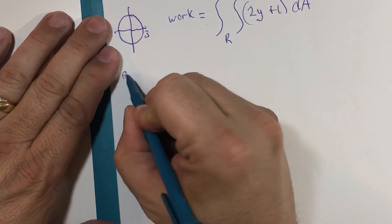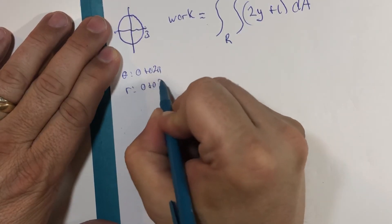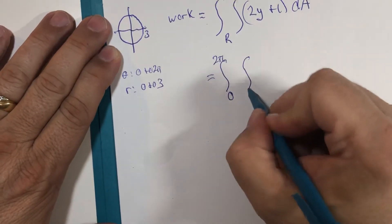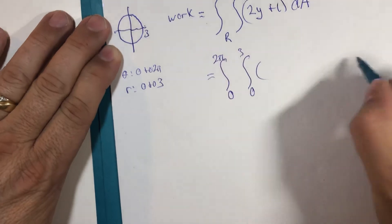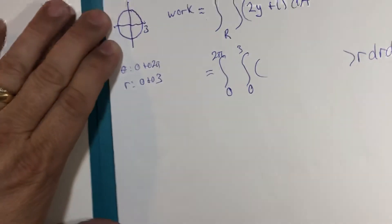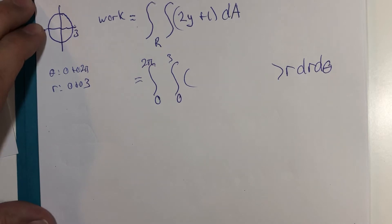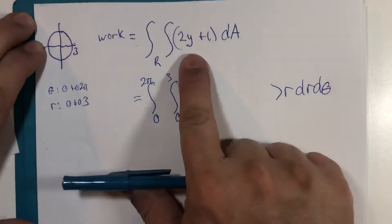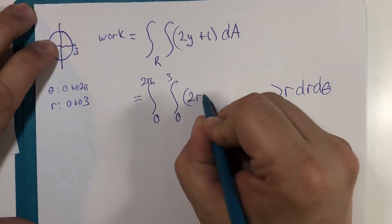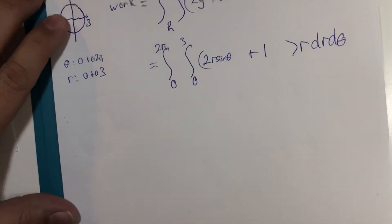And we know that theta is 0 to 2 pi and r is 0 to 3. All right, 0 to 2 pi, 0 to 3. And dA becomes r dr d theta. Well, you can't leave y. It's not polar. Y is equivalent to r times sine of theta. Now we're converted. This is what we're about to evaluate.